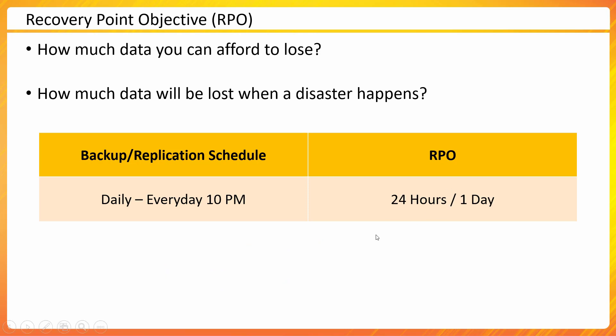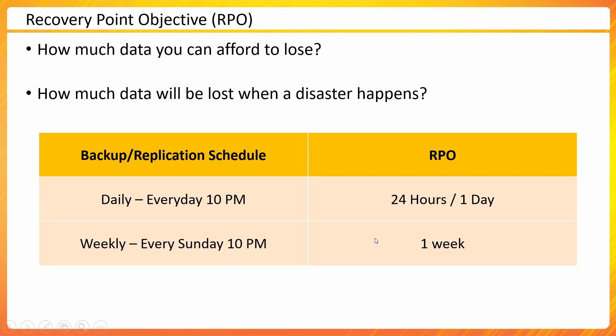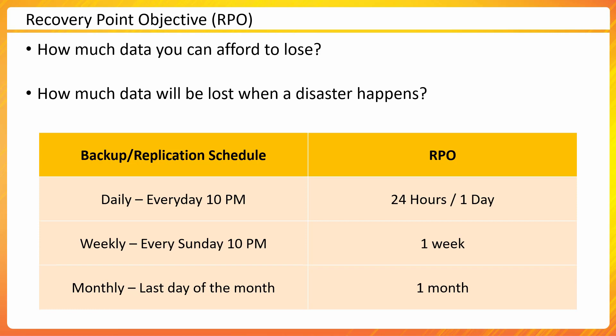If your application doesn't require that tight an RPO, maybe you take backups on a weekly basis every Sunday at 10 PM — then you have an RPO of one week, meaning up to one week of data may be lost. If you take monthly backups, you could lose up to one month of data. So RPO is directly proportional to your backup or replication schedule. For very critical applications, you may perform continuous replication so that data loss is almost zero or actually zero.